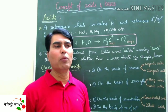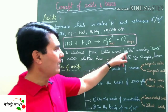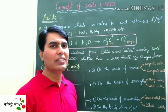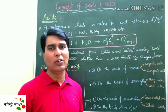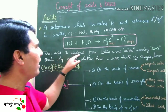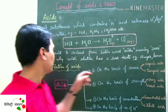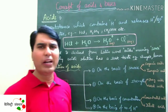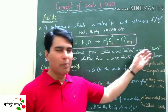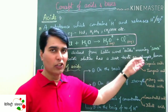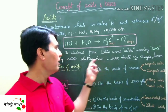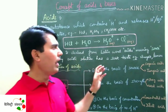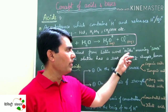Why do we call them 'acids' and not something else? We should know that in Latin, the word is 'acidus', which means sour. The word 'acid' is derived from the Latin word 'acidus', meaning sour. That is why acidic solutions have a sour taste. Examples include vinegar and lemon. Lemon juice and vinegar available in the market taste sour because they are acidic solutions.